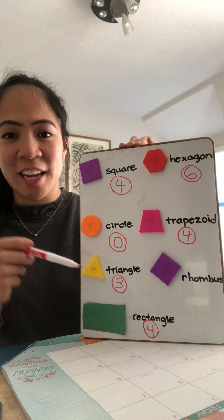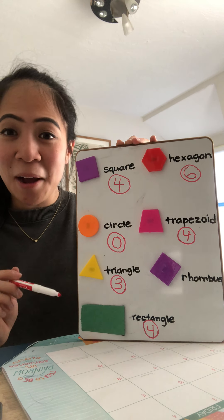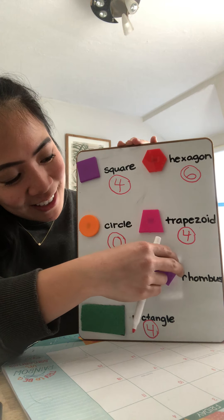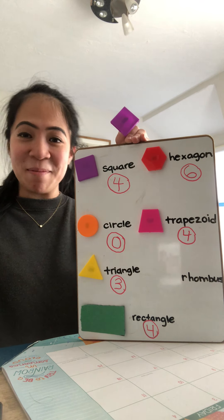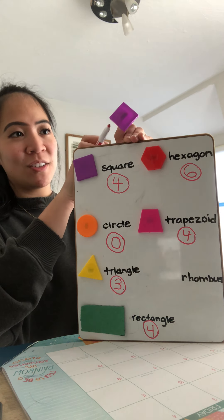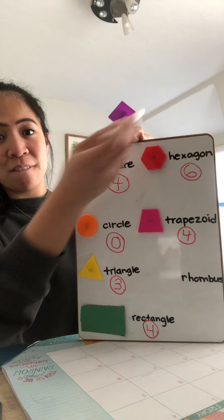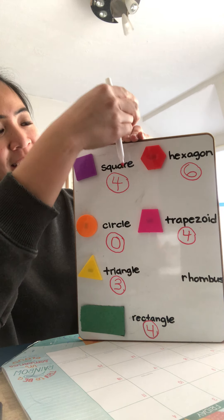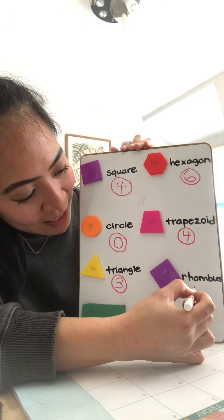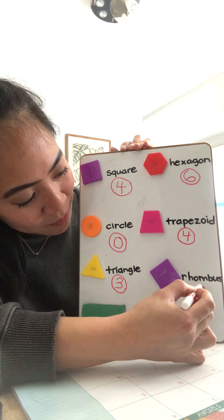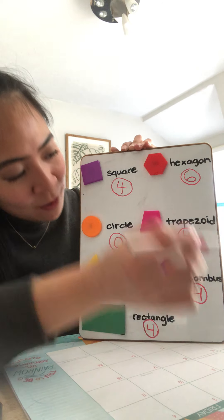And the last shape is the rhombus, the diamond. Let's count how many sides a diamond has. One, two, three, four. Four sides in a rhombus or diamond. Great job.